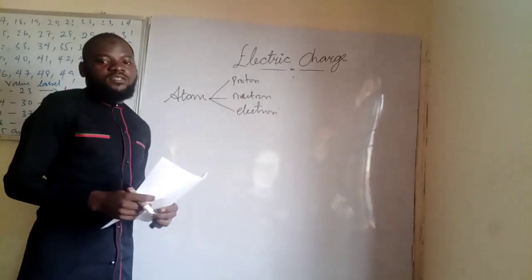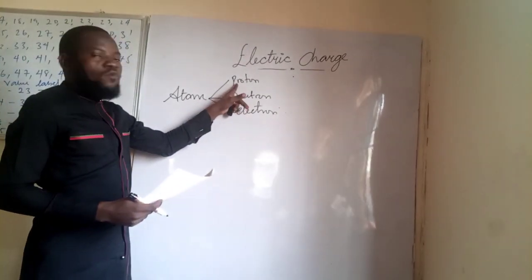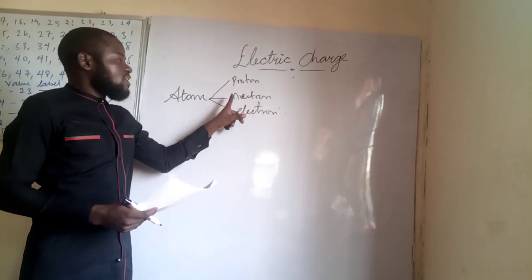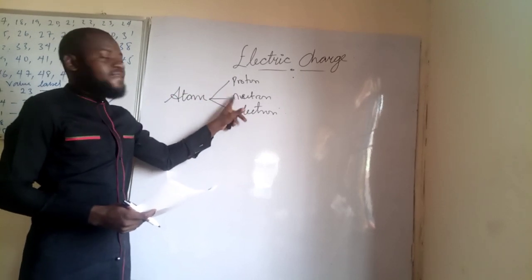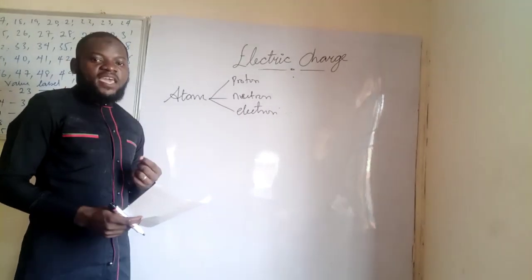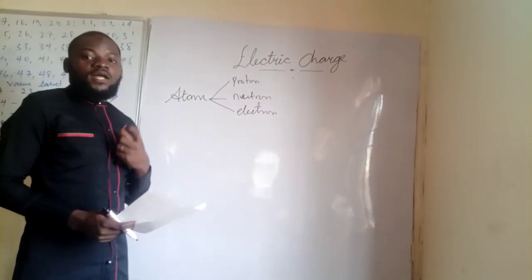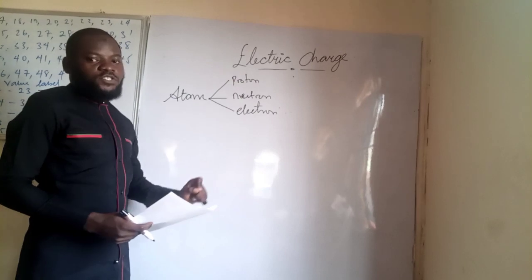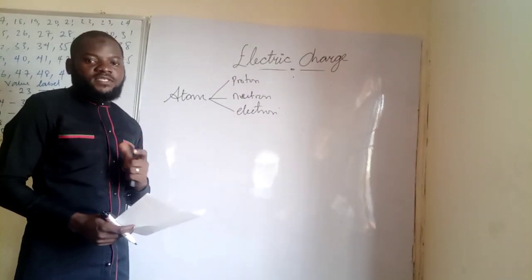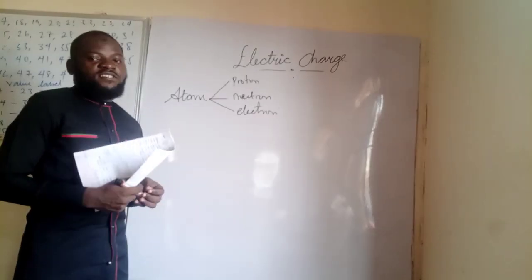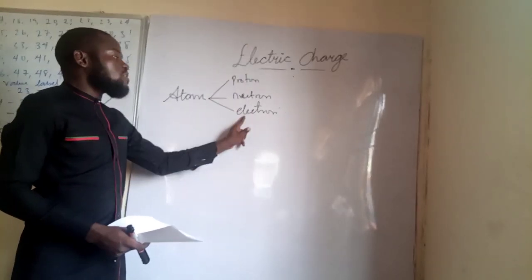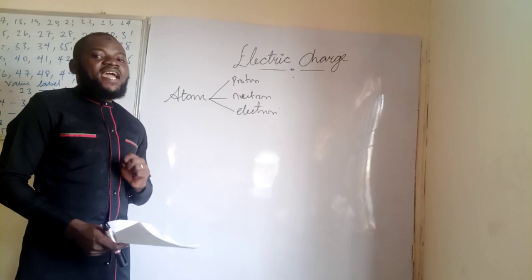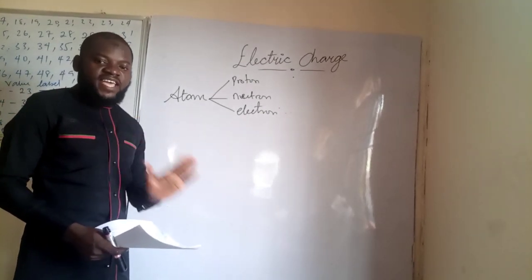In terms of mass, the proton has more mass compared to the electron, but approximately the same as the neutron. We are not actually looking at their mass in this video. What we are about to discuss is their charge. The charge on a proton is positive, the charge on a neutron is zero — it is electrically neutral — and the charge on an electron is negative. So we only have two types of charges: positive and negative.